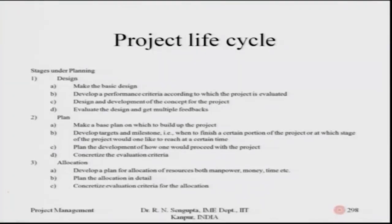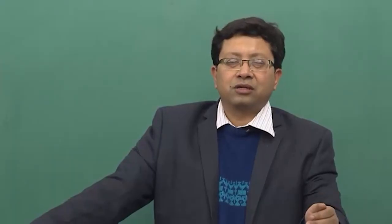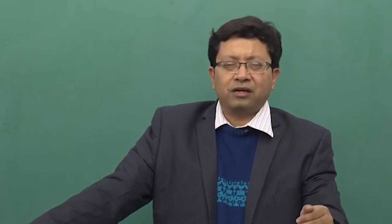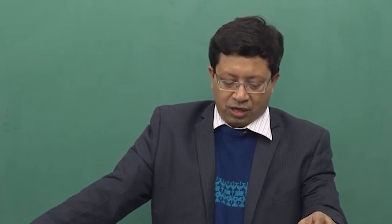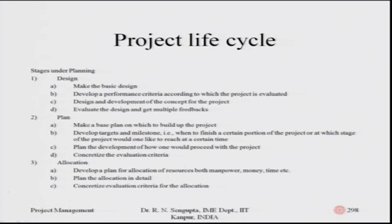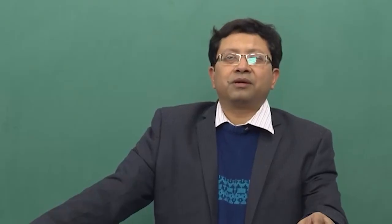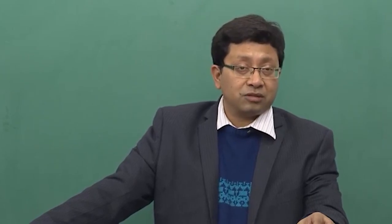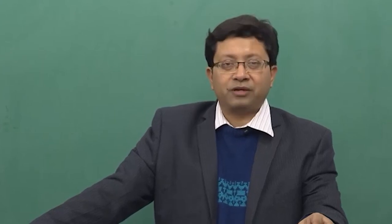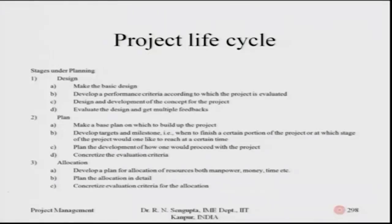You plan the development and how one would proceed with the project — plan it such that your goal is met within the deadline and within cost. If there are any cost overruns, how you will manage that in order to meet the overall goal. You concretize the evaluation criteria — which may be cost, return on investment, or the interest rate being charged to customers, compared with competitors in the market. When you come to the allocation stage, you develop a plan for allocation of resources: manpower, material, machine, and financial resources. You plan the allocation in detail for each activity or sub-group of activities on a micro level.